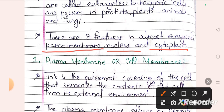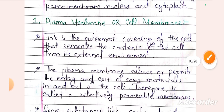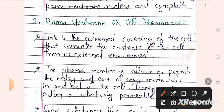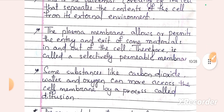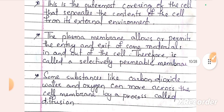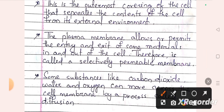The plasma membrane, also called cell membrane, is the outermost covering of the cell that separates the cell's contents from its external environment. It allows and permits the entry and exit of some materials in and out of the cell. The plasma membrane is selectively permeable, also called a semi-permeable membrane.